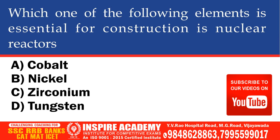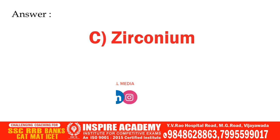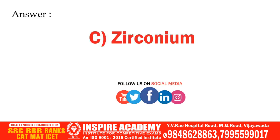Which one of the following elements is essentially used for construction in nuclear reactors? Options: Cobalt, Nickel, Zirconium, or Tungsten. And the correct answer is Zirconium.